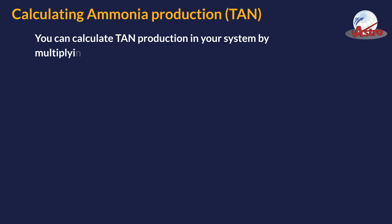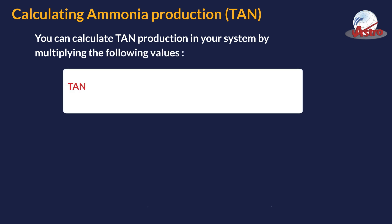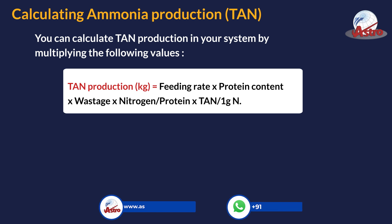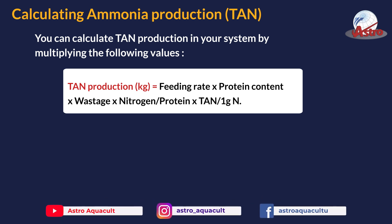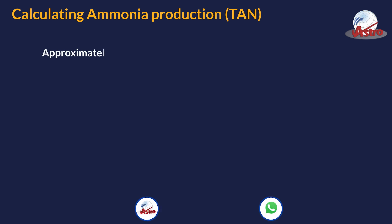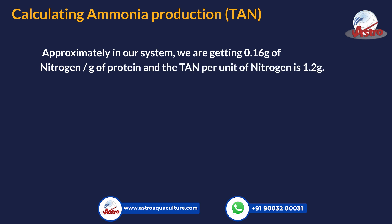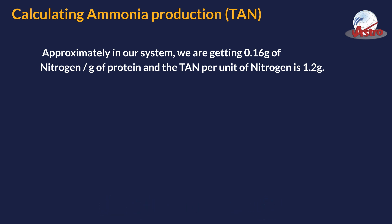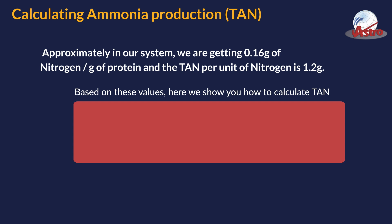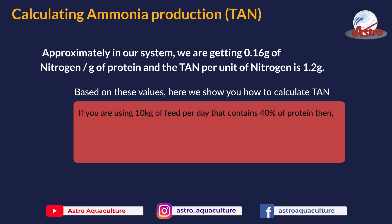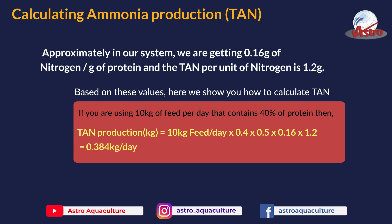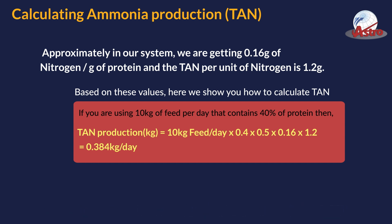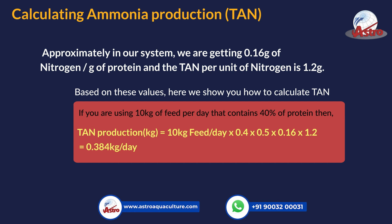You can calculate TAN production in your system by multiplying the following values: TAN production (kg) = feeding rate × protein content × wastage × nitrogen-to-protein ratio × TAN-to-nitrogen ratio. In our system, we get approximately 0.16 grams of nitrogen per gram of protein, and the TAN per unit of nitrogen is 1.2 grams. For example, if you use 10 kg of feed per day containing 40% protein, then TAN production (kg) = 10 × 0.4 × 0.5 × 0.16 × 1.2 = 0.384 kg per day.